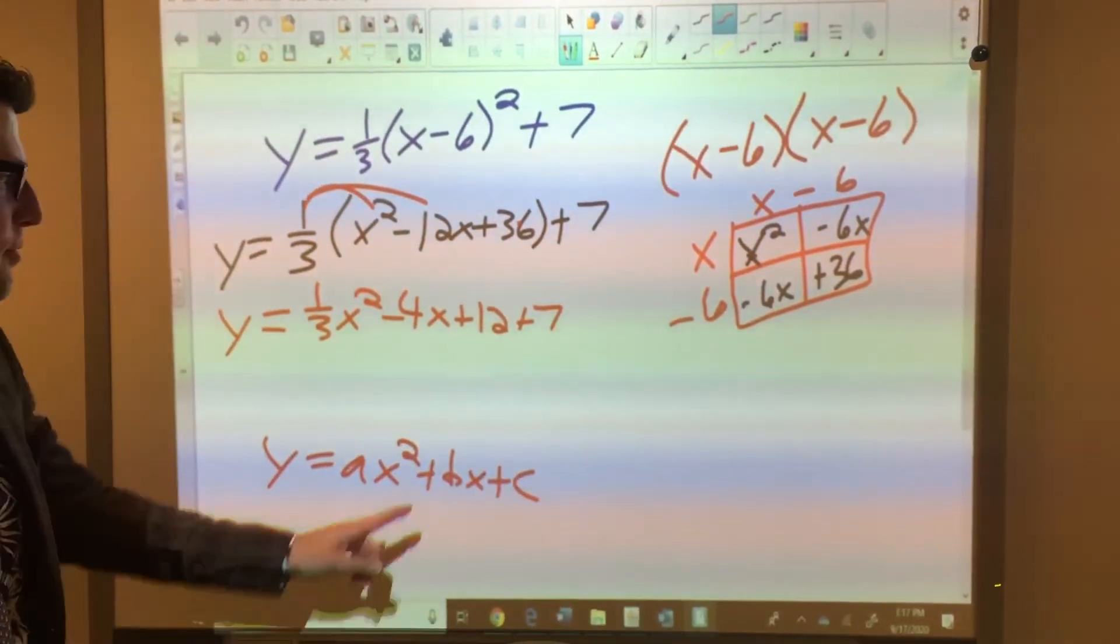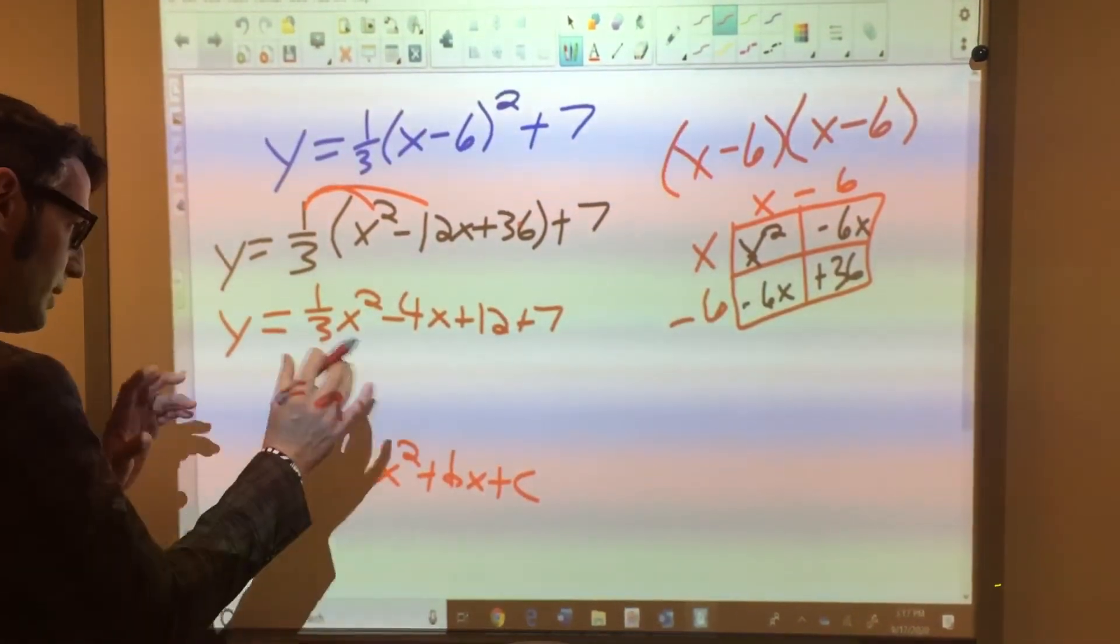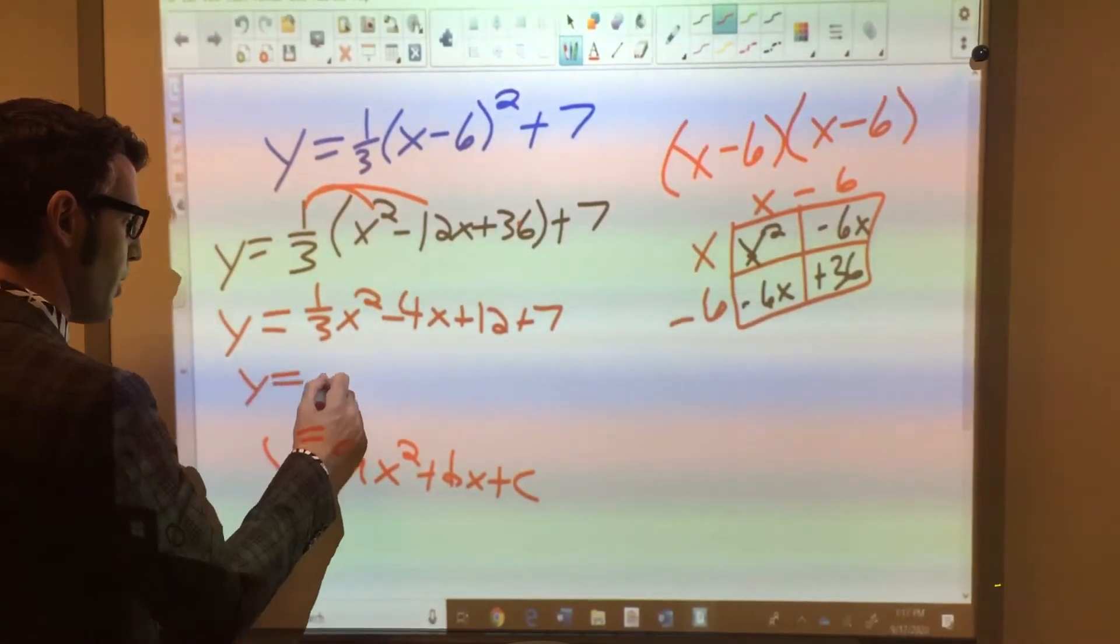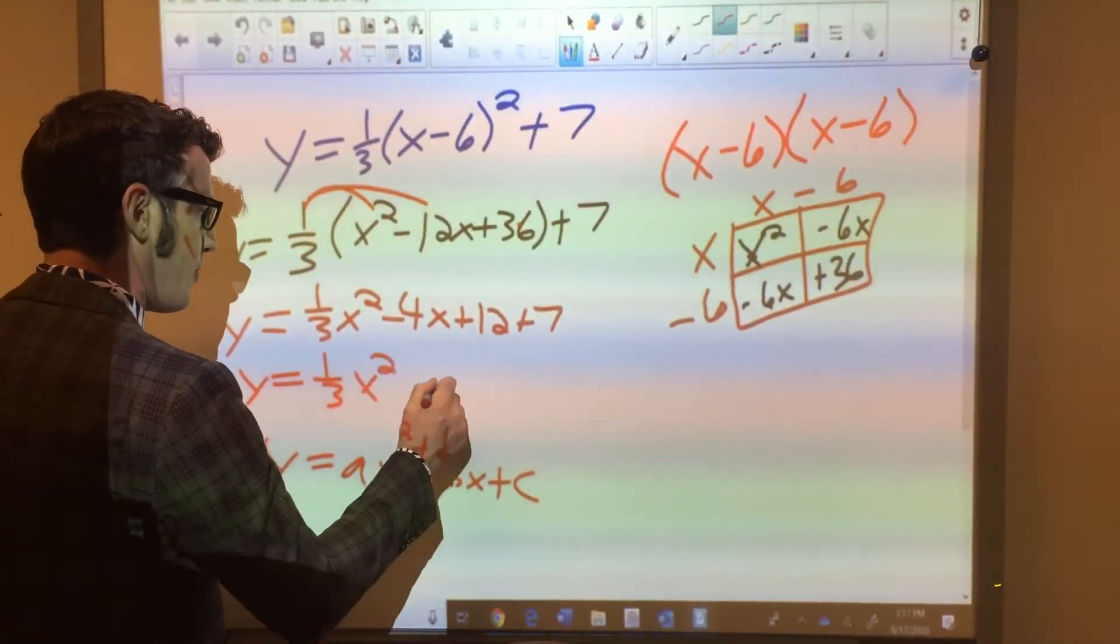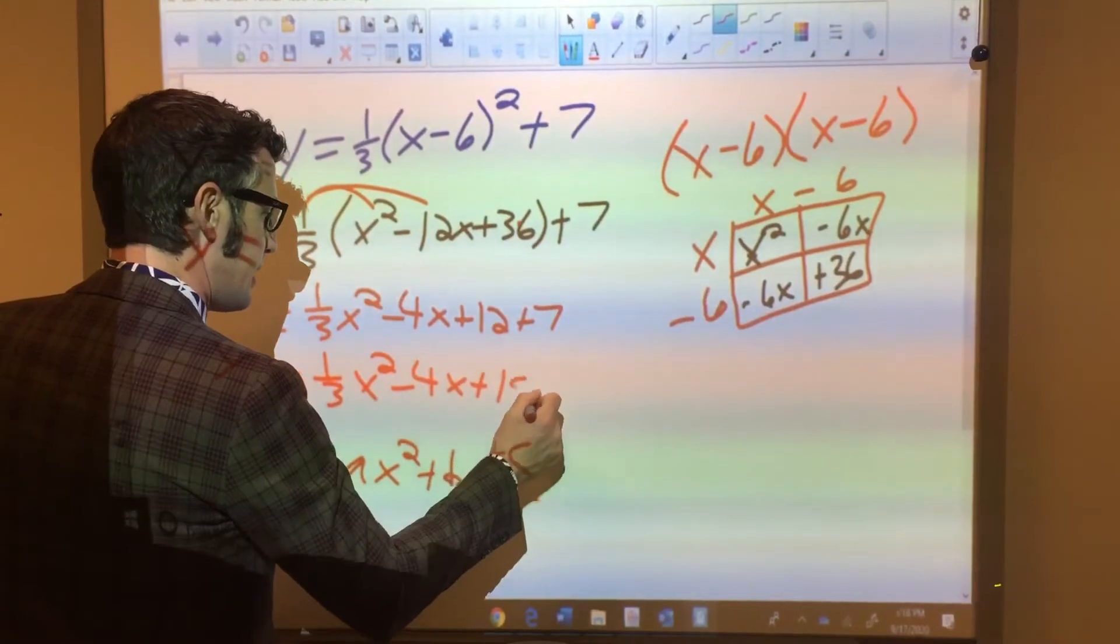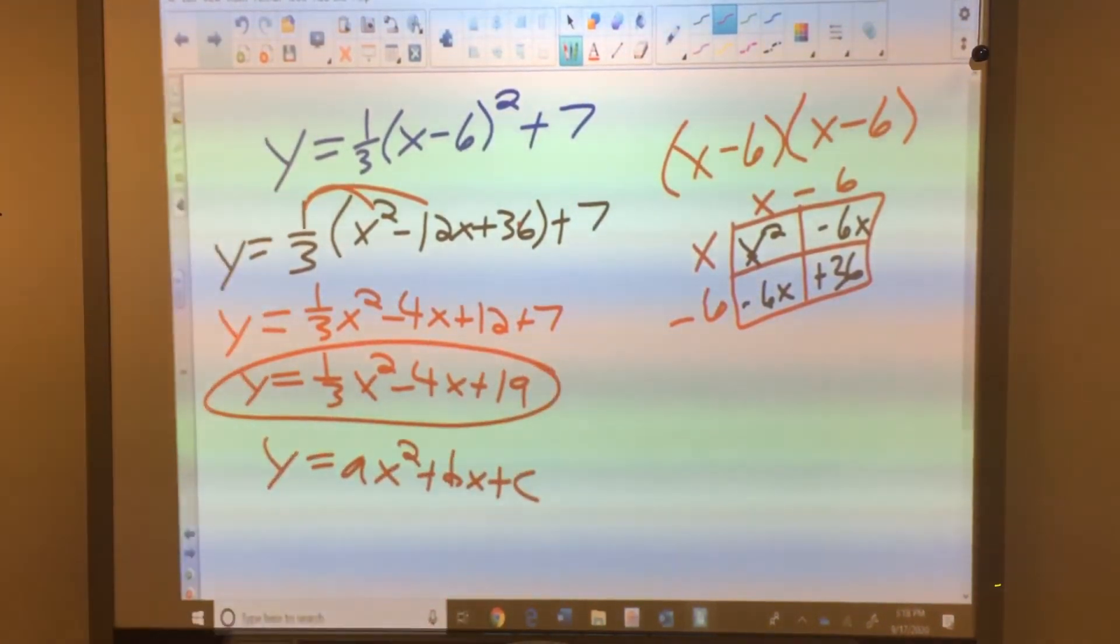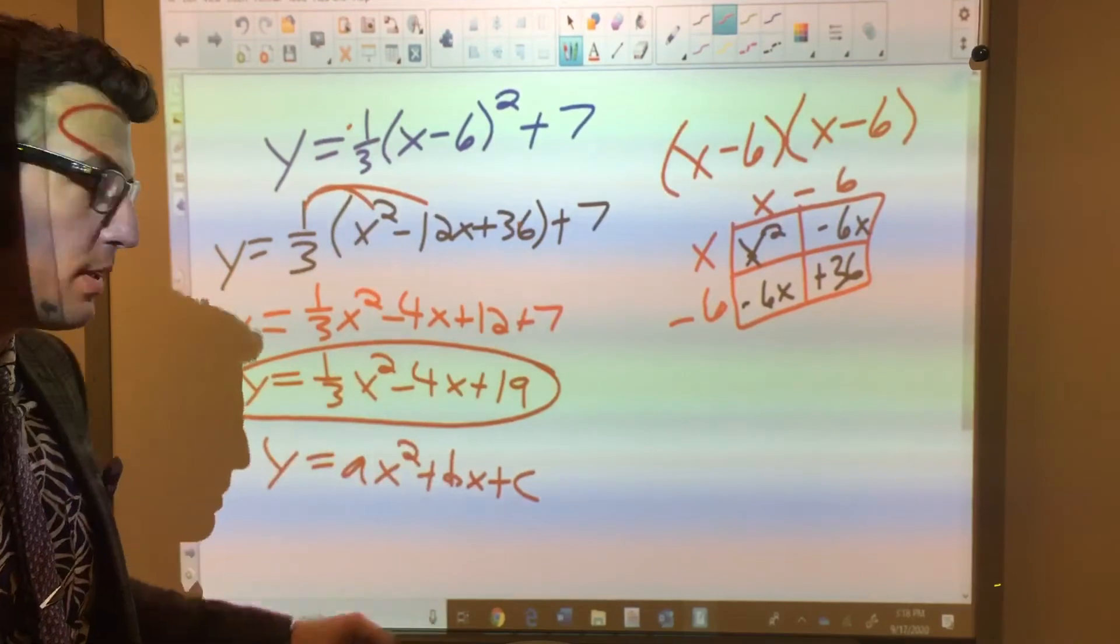I'm not finished yet, because I have two constants, and I should be down to a single constant. So, y equals 1/3 x² - 4x + 19, is what you should end up with as your standard form if you've tried to convert this.